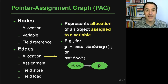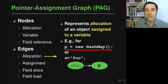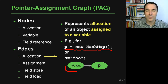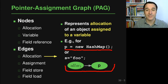Now let's look at the edges in this graph. The first is an allocation edge, which represents the fact that some newly allocated object is assigned to a variable. If we have code like 'p = new HashMap()', we get a graph representation where alloc1 is the allocation site where the new HashMap constructor is called, p is the variable node representing p, and there is an edge between them because this newly allocated object is assigned to p.